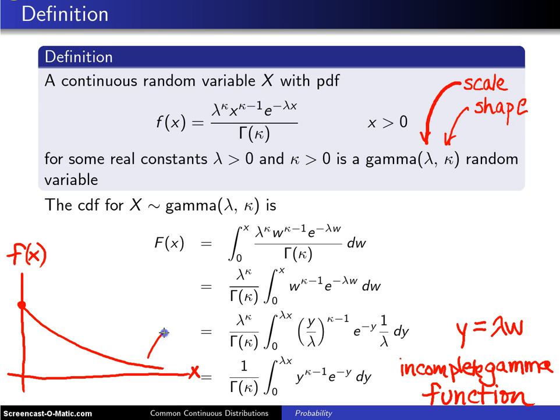When κ is greater than 1, it assumes a shape that looks like this, and when κ is less than 1, it has an asymptote at 0 and looks something like this. So it takes on a number of different shapes.